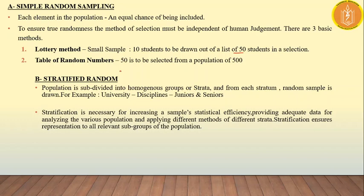The second method is the table of random numbers, where 50 people are to be selected from a population of 500.